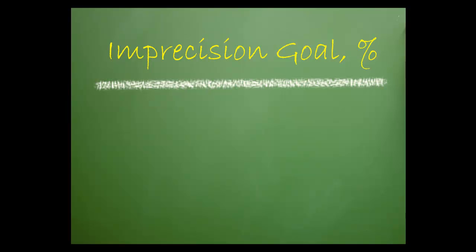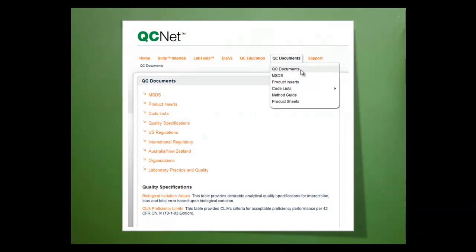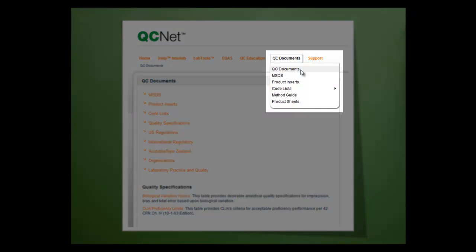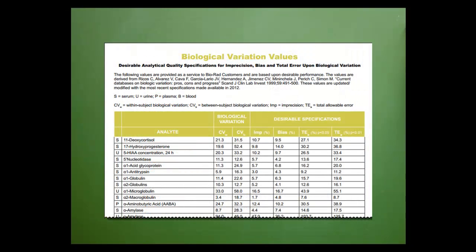To calculate for the imprecision goal percent, there are two key pieces of information that are required: published biological variation data within subject, and the performance goal for imprecision that the laboratory wants to achieve. First, how do we determine if there is published biological variation data for a test? A database of values can be found at www.qcnet.com within the documents section.